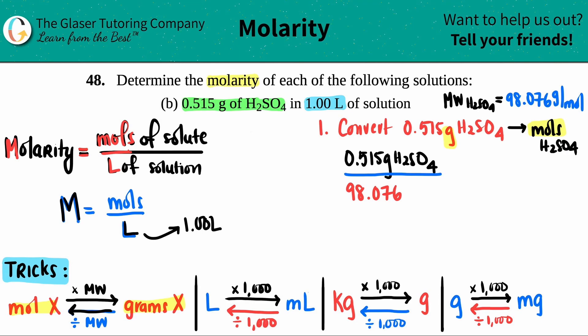0.515 divided by 98.076 gives me roughly 0.00525 moles of H2SO4. Perfect! Now we found this top value: 0.00525 moles.